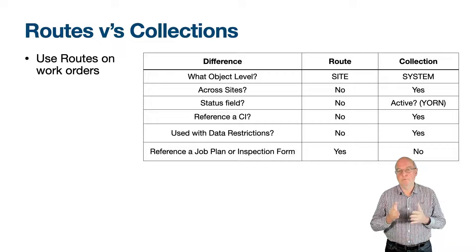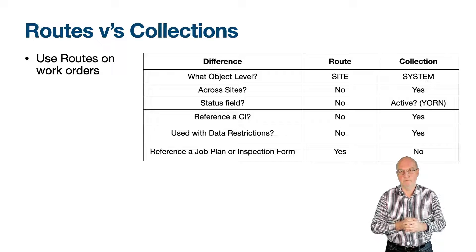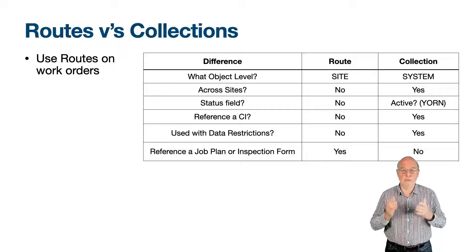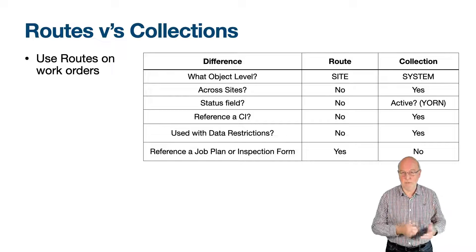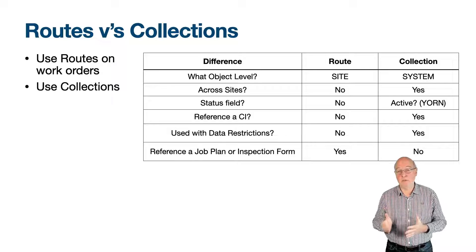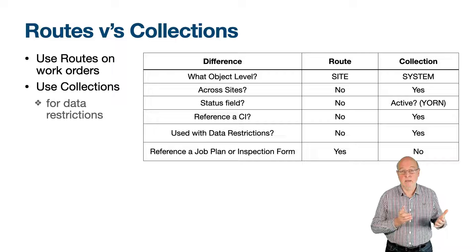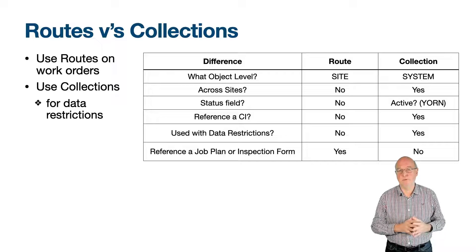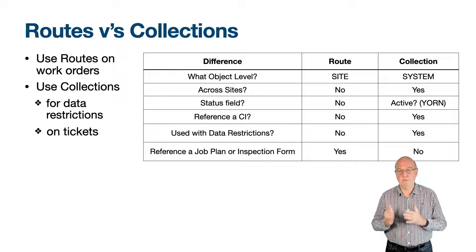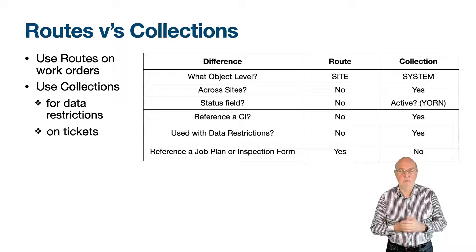When you think of a route, think of it in the context of work management, especially an inspection. A round is implemented with a route. If you have linear assets, routes play an important part. Remember, all work is performed at the site level in Maximo. When you think of a collection, think about the security of location, asset or configuration item records. If you need to add multiple locations, assets or configuration items to one of the ticket-based applications — for example a service request — then think first about using a collection, unless you have an existing route. Collections are great for campaigns used across multiple assets or locations, for example as a result of a safety investigation.